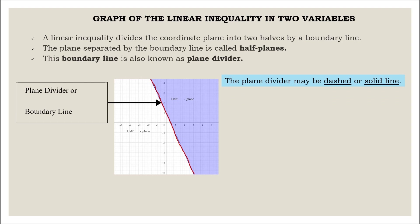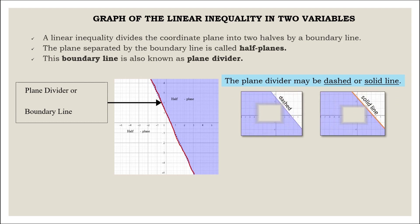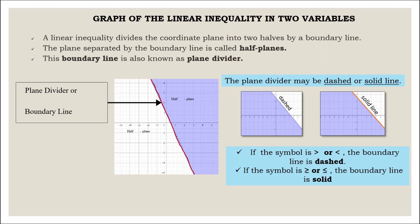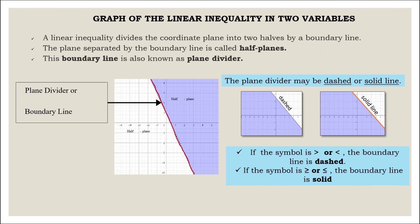The plane divider may be a dashed or solid line. If the symbol is greater than or less than, the boundary line is dashed. If the symbol is greater than or equal to, or less than or equal to, the boundary line is solid.